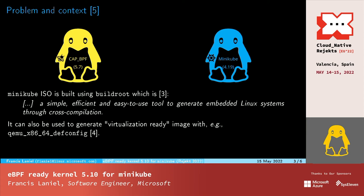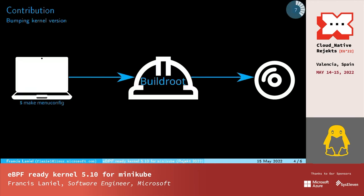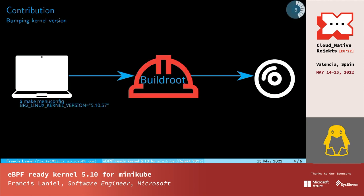Even though BuildRoot is targeted to generating embedded systems, it can also be used to generate virtualization-ready images — for example, with the make qemu-x86-64 defconfig. What I did is run make menuconfig, which enables you to configure BuildRoot to generate an image, and I bumped the BR2_LINUX_KERNEL version from 4.19 to 5.10.67.